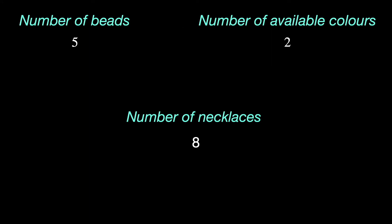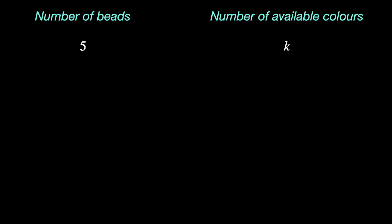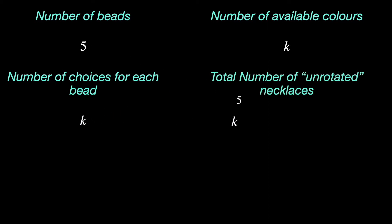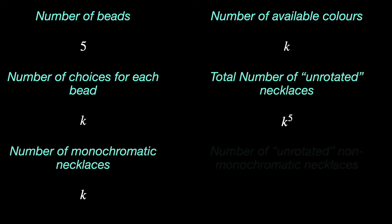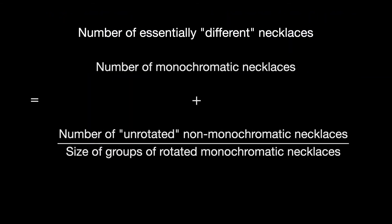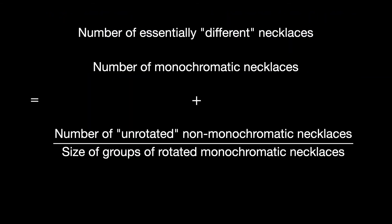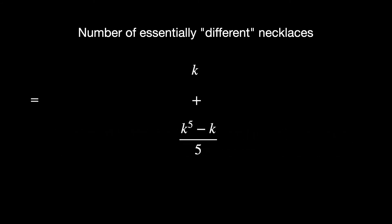Let us now suppose we have some k number of colors to color our five beaded necklace. By the same logic as before, we have k to the power of five colorings in total, as there are k choices for each bead. Among these, the k to the power of five minus k non-monochromatic necklaces must come in groups of five rotations. So, we have k to the power of five minus k over five essentially different non-monochromatic necklaces and k monochromatic ones.